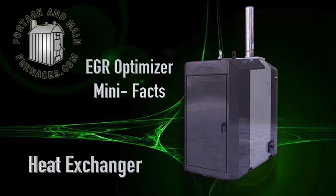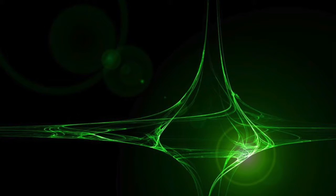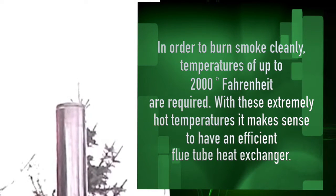Heat Exchanger Facts: In order to burn smoke cleanly, temperatures up to 2,000 degrees Fahrenheit are required. With these extremely hot temperatures, it makes sense to have a high efficiency flue tube heat exchanger.